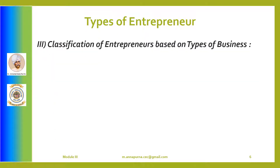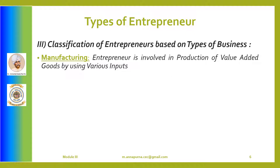The next set of entrepreneurs are classified based on types of business. Here we have four types: Manufacturing, Wholesaling, Retailing, and Service. Manufacturing entrepreneurs are those who are involved in production of value-added goods by using various inputs like raw materials, consumables, labor, power, and other utilities. Normally, the value-added goods produced can be a variety of products like castings, forging, soaps, detergents, various chemicals, textiles, plastic components, foodware, school bags, electronic and electrical items, computer-related products, etc.